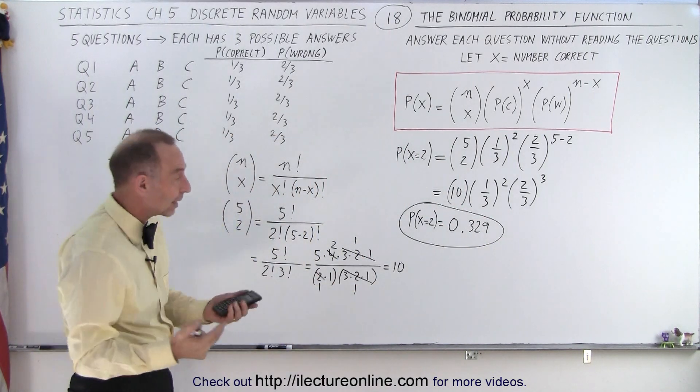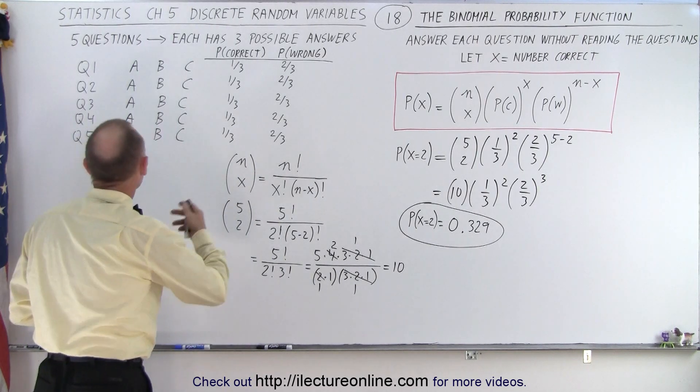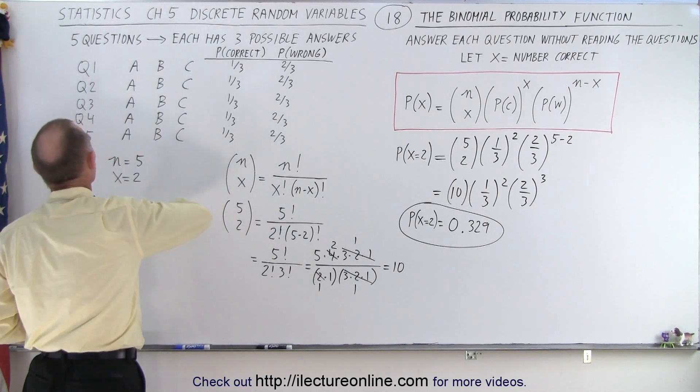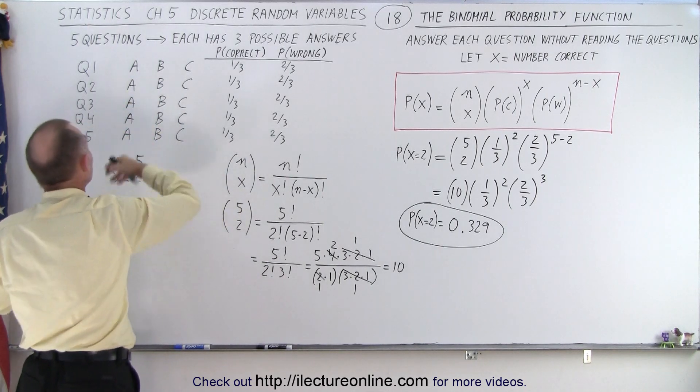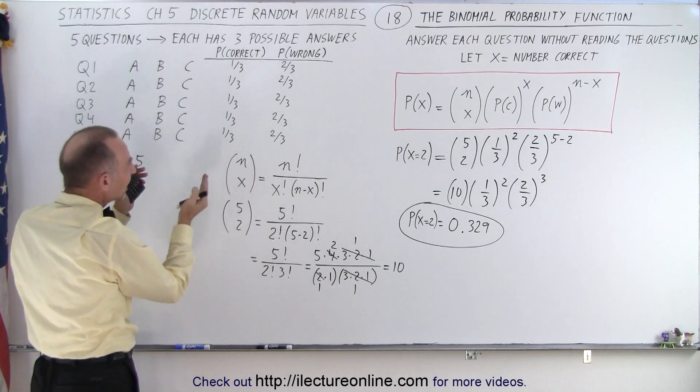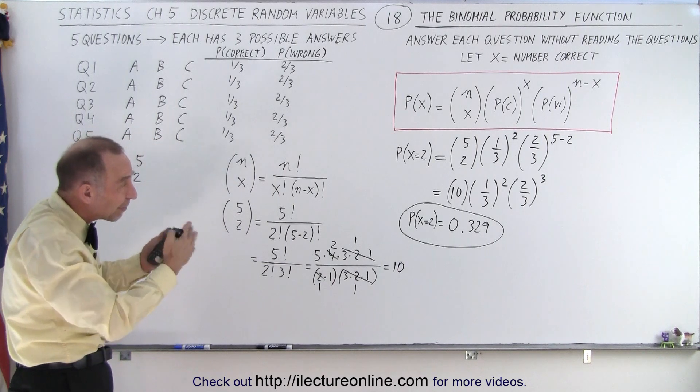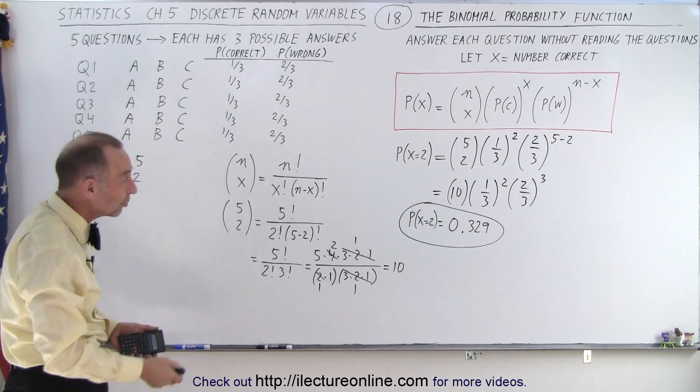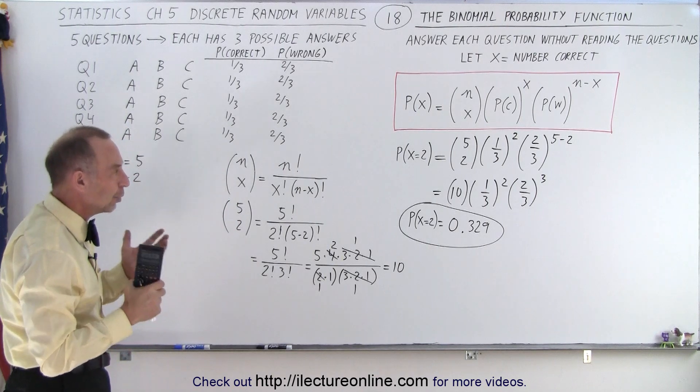There's a fairly high probability, almost one-third probability to get two right, because notice that to get them all wrong would be a fairly small probability, and to get them all right would be even smaller probability. But you expect the probability to increase when you get close to the average number of correct answers, and two would be fairly close to the average number of correct answers, so you expect that to be a fairly high probability.